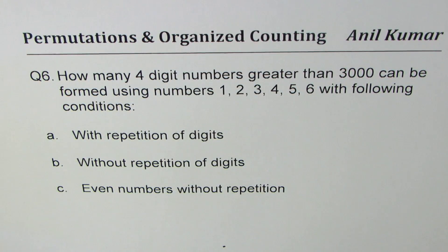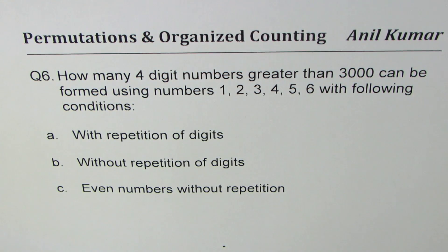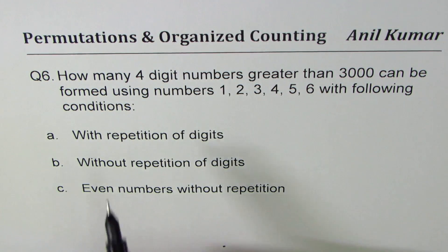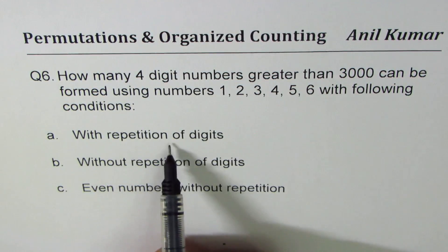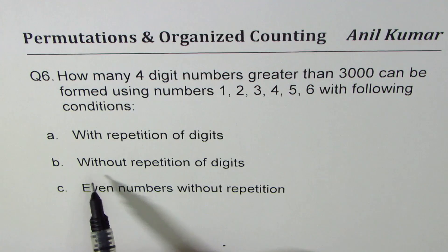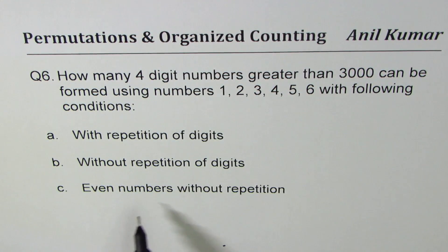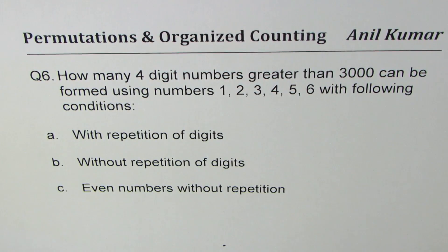I'm Anil Kumar sharing with you questions of permutations and organized counting. Here is question number six: how many four-digit numbers greater than 3000 can be formed using numbers one, two, three, four, five, six with the following conditions — a) with repetition of digits, b) without repetition of digits, c) even numbers without repetition. So let's do part a first.